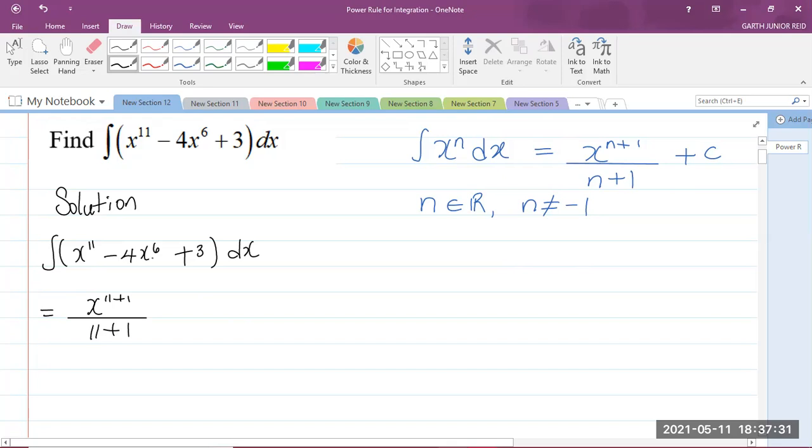Now, we have negative 4x to the power of 6. Negative 4 is a constant, so we can keep that on the outside. The integral of x to the power of 6, you add 1 to the power, so that's x to the power of 6 plus 1, and you're going to divide that by the same power, which is 6 plus 1.